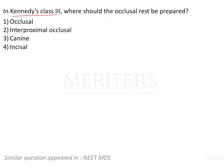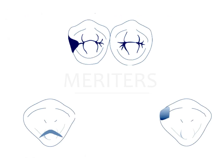In Kennedy's class 3, where should the occlusal rest be prepared? On the occlusal surface, interproximal occlusal surface, canine and incisal. So there are three types of rests: one is occlusal rest, second is canine, and third is incisal.